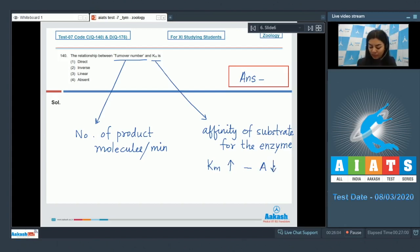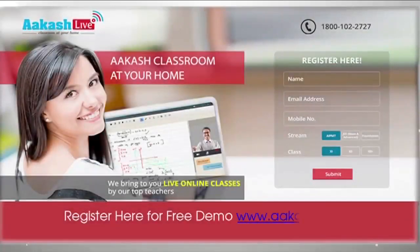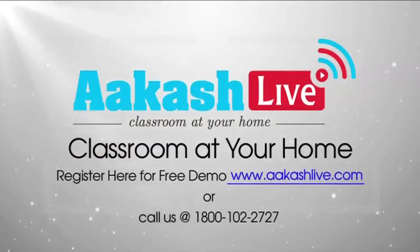But remember, this affinity relationship is inverse. It means if the Km value is higher, then the affinity of that enzyme for that substrate would be lower and vice versa. The lesser the Km, the higher the affinity of enzyme for that particular substrate, which means if the Km is lesser, the affinity would be higher, and when the affinity is higher, the turnover number would also be higher because the number of product molecules formed would be higher. Thus the relation between Km and turnover number is inverse. The right option would be option number two, inverse. The right answer is two.